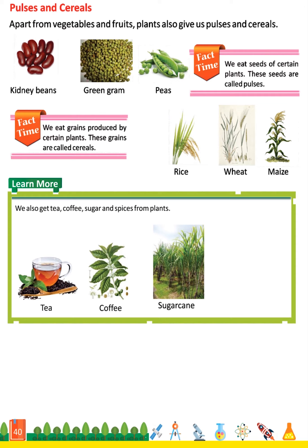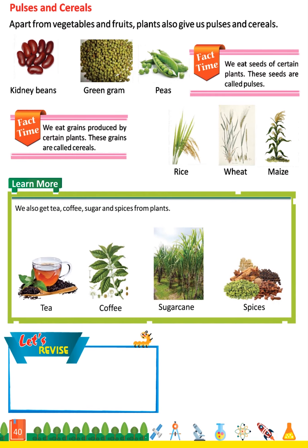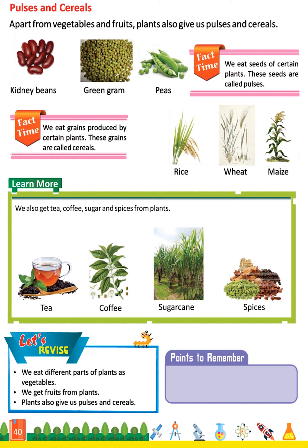Let's revise: We eat different parts of plants as vegetables. We get fruits from plants. Plants also give us pulses and cereals. Points to remember: Pulses are seeds of plants. Cereals are grains produced by plants.